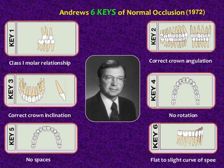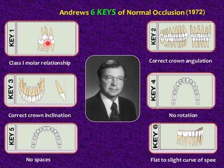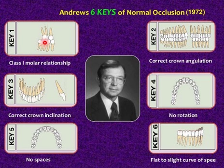Key number one is the molar relation. The distal surface of the distal buccal cusp of the upper first molar occludes with the distal buccal cusp slope of the lower second molar. The mesial buccal cusp of the upper first molar occludes with the mesial buccal developmental groove of the lower first molar. This means Angle Class I.